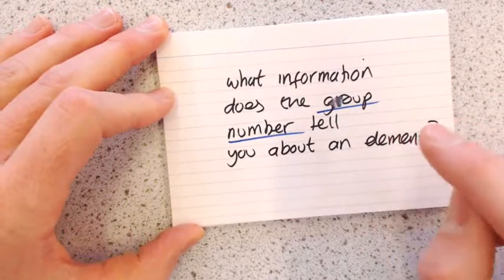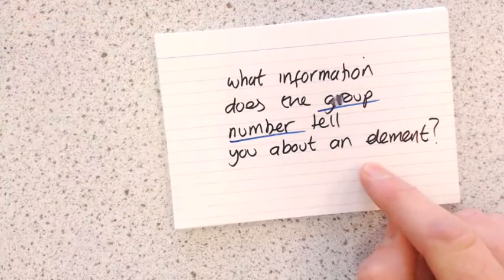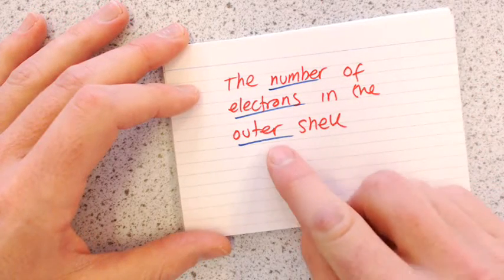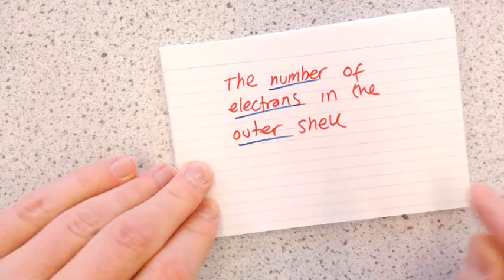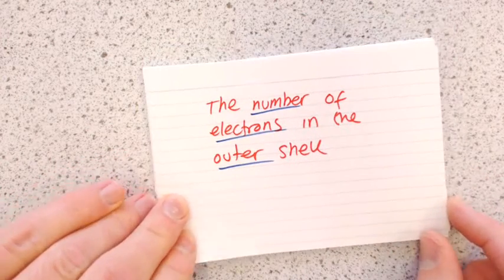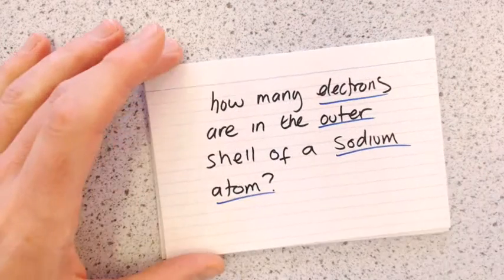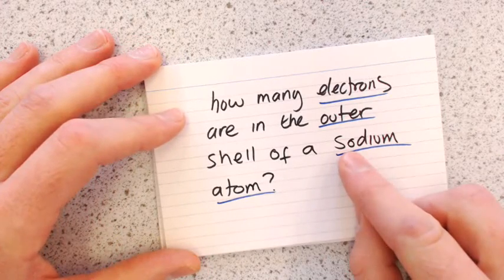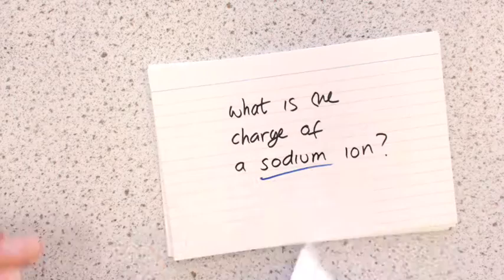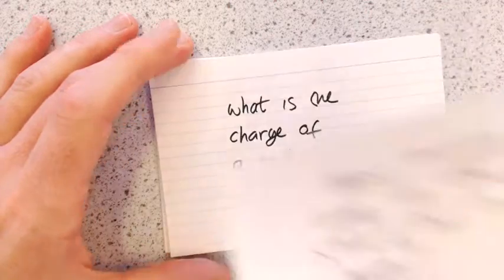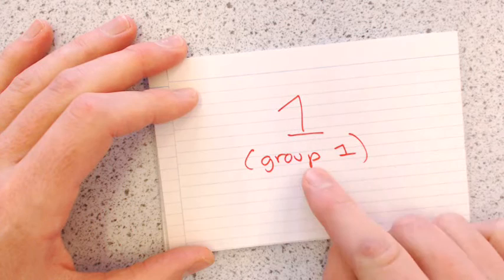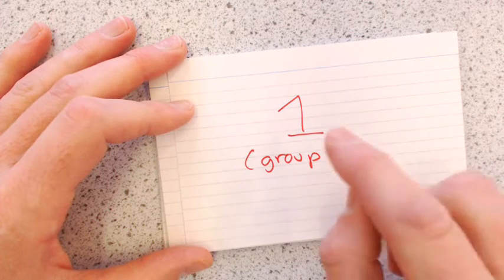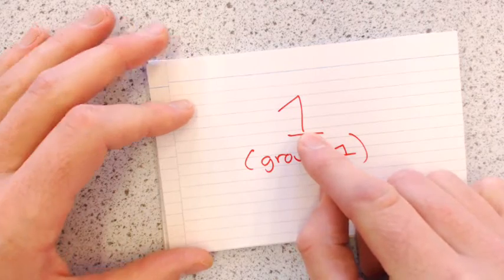What information does the group number tell you about an element? It tells you the number of electrons in the outer shell, which is really useful when you want to do bonding diagrams. For example, how many electrons are in the outer shell of a sodium atom? One, because sodium is in group one.